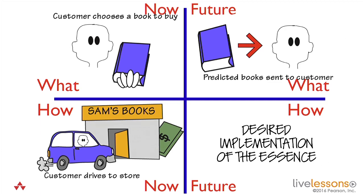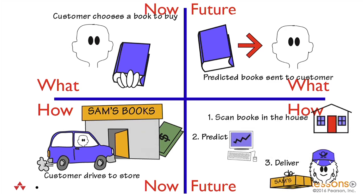Once we've settled that as being our future what, our future essence, then we say, how are we going to do that? We'll do that by scanning books in the house, maybe interviewing the people, making the predictions, and then using one of the delivery services in order to get the books out to the particular customer. I arrive at the future technology, the future how — I don't start there. And we must keep that in mind because I really want to make sure that I am solving the right problem, by spending time above the line thinking about what it is I'm trying to do, not how I'm going to do it.